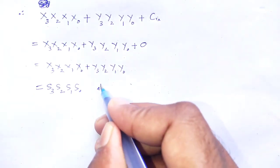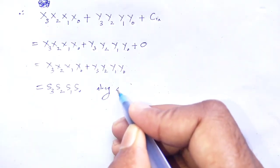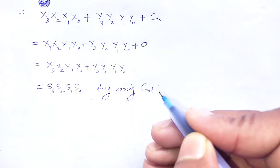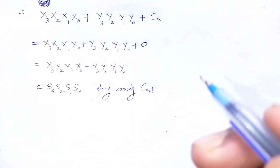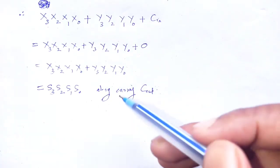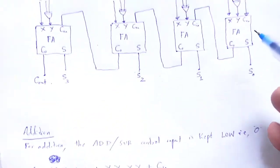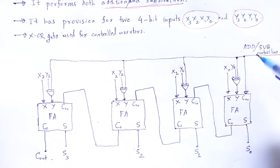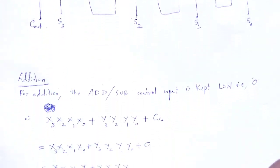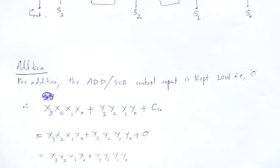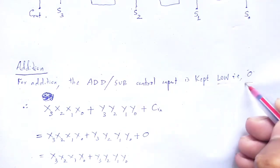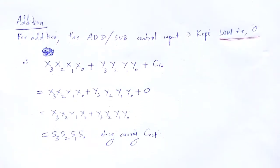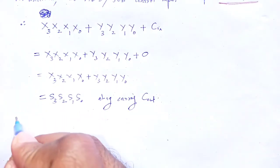At the output we obtain the sum along with carry C as output. In this way, by using that particular 4-bit parallel adder-cum-subtractor we perform addition when we take low input, but when we take high input it performs subtraction.